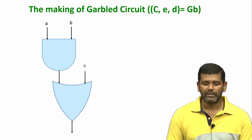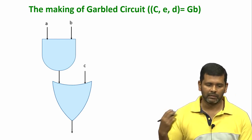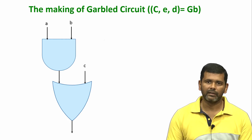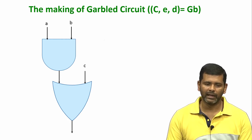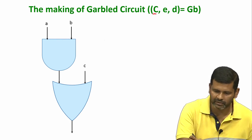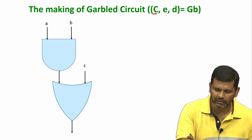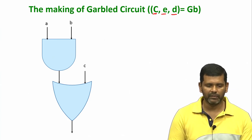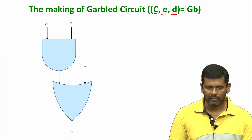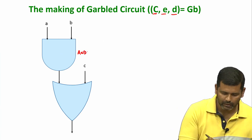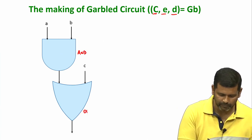We will first see how exactly the gates are garbled, the inputs are garbled, and how exactly a garbled circuit is evaluated on garbled inputs. We have to look into the construction of this garbled circuit, the details of the encoding information E and the decoding information D. For illustration, I will take this simple Boolean circuit which has an AND gate and a NOR gate.